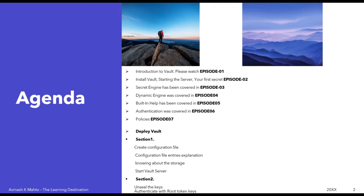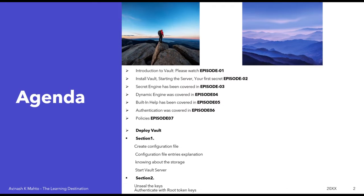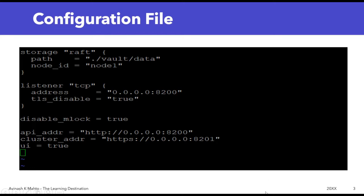Before starting the practical session, let me go through some theoretical explanations about the configuration file. On screen, you can see that there are several sections defined under the configuration file: storage, listener, disable mlock, API address, cluster address, and finally the user interface, which is set to true.